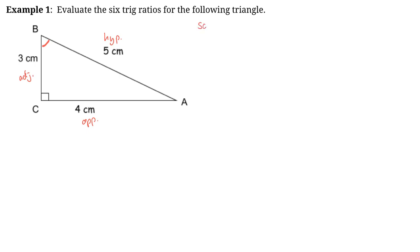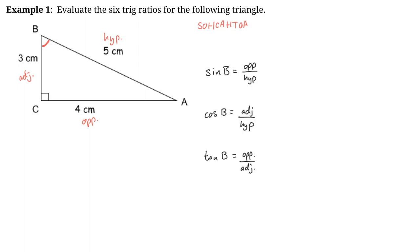Using SOH CAH TOA, here are the three primary trig ratios. The sine of angle B is opposite over hypotenuse, which is 4 cm over 5 cm. The cosine of B is adjacent over hypotenuse, so that's 3 over 5. And the tangent of angle B is opposite over adjacent, so that's 4 over 3.